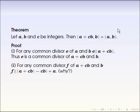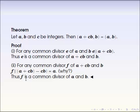The second part is the other way. Let's choose any divisor of b and a plus c times b, and call it f. Then by theorem two, any linear combination of these two numbers also has f as a divisor. One possible combination is a plus c times b minus c times b, which equals a. So f must also be a divisor of a. Altogether, f must be a common divisor of a and b. Therefore, any common divisor of a and b must be a common divisor of b and a plus c times b, and vice versa. So the greatest common divisor of a and b must equal the greatest common divisor of b and a plus c times b. That's the end of the proof.